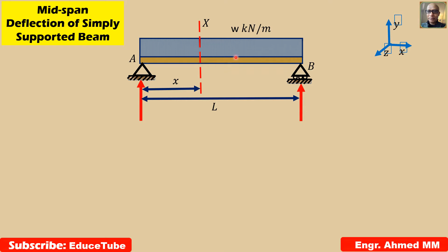There are two design criteria for the deflection of a beam: strength and stiffness. As per the strength criteria, the beam should be strong enough to resist bending moment and shear. As per the stiffness criteria, it should be stiff enough to resist the deflection of the beam. This is a very important point to understand.